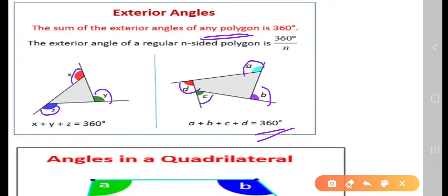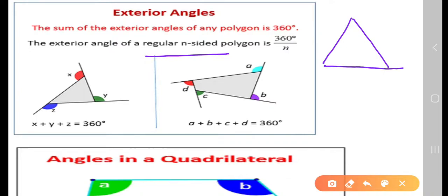Now, a formula is the exterior angle of a regular n-sided polygon. You should note this word, regular n-sided polygon. It should be regular, not any polygon with the exterior angle 360, it is different. Regular n-sided polygon, that is, it should be equilateral triangle. Then we can find exterior angle of a regular n-sided polygon is 360 by n.